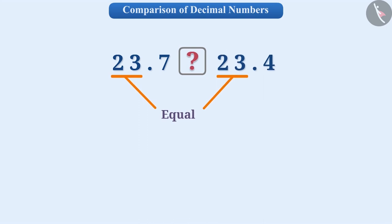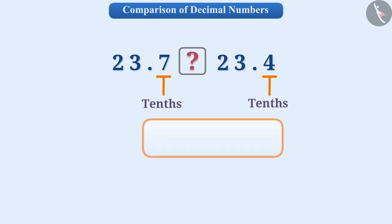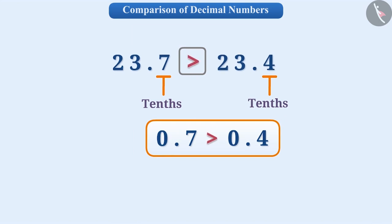For example, between 23.4 and 23.7, whole numbers are equal. So, we will compare the tenths parts. Here, 7 tenths is greater than 4 tenths. Therefore, 23.7 is greater than 23.4.